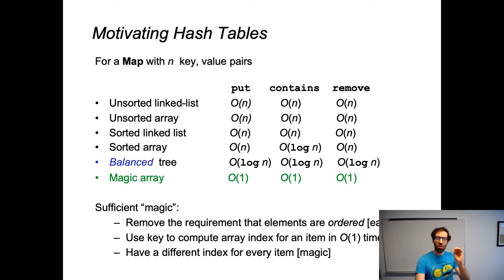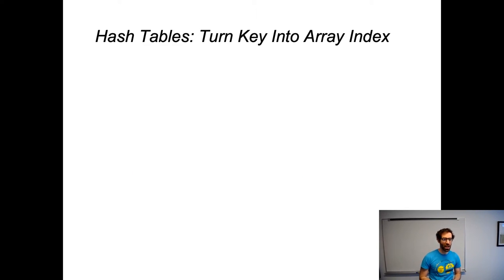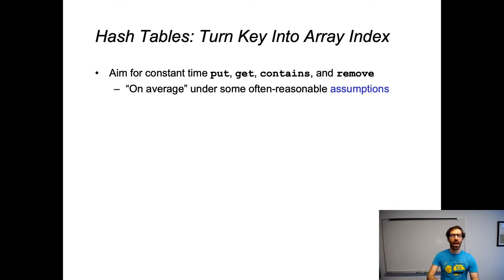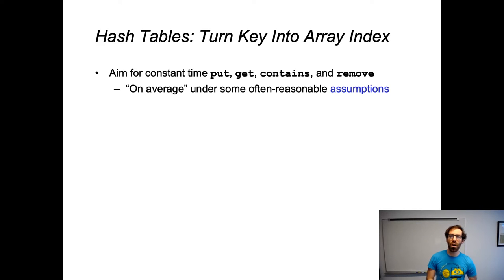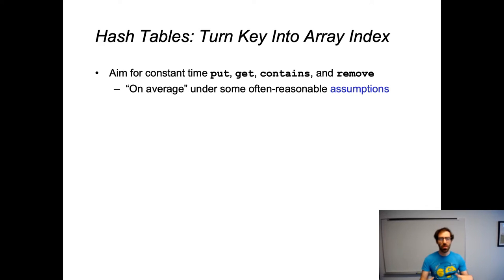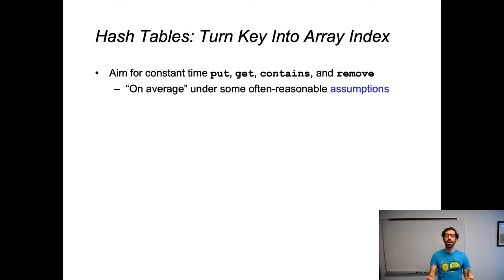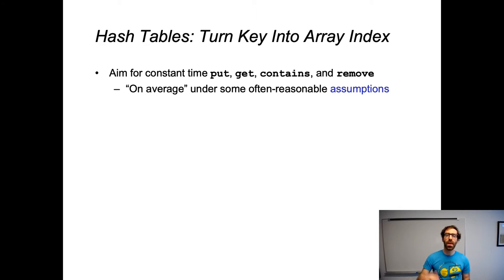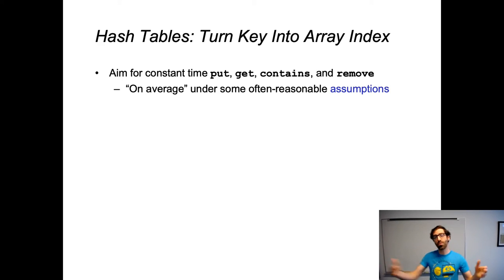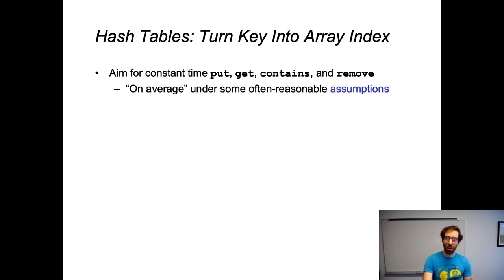Let's talk about this turning a key into an array index. Our aim is to get constant time put, get, contains, and remove for the map ADT, and we're going to indeed get constant time, but this is going to be kind of on average, under usually reasonable assumptions — in the same way that adding to the end of an ArrayList is constant time on average, even though sometimes we have to extend the internal array. Hash tables will work in a similar fashion.